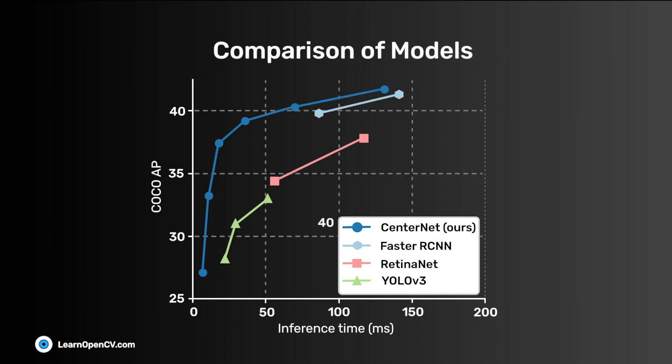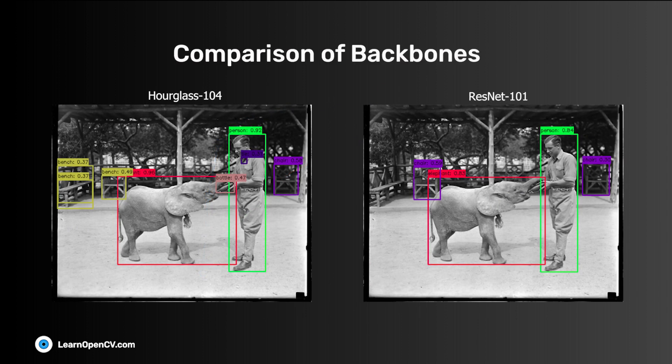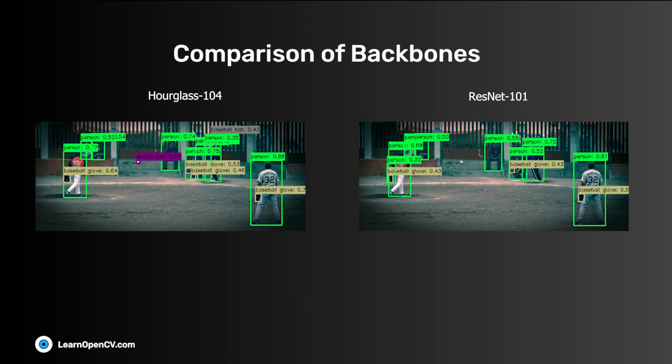Comparing the latency and the MAP plot, CenterNet performs better than YOLO v3, faster RCNN, and RetinaNet. Comparing the hourglass and ResNet backbone, we discover hourglass performs better. In this image, hourglass is able to detect the bench, but ResNet cannot. Meanwhile, in this image, hourglass can detect the sports ball, yet ResNet cannot.